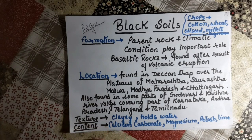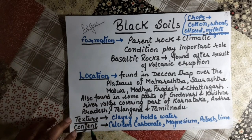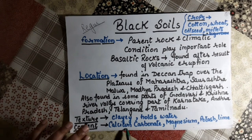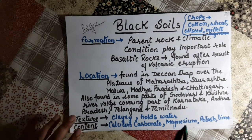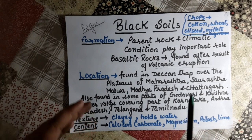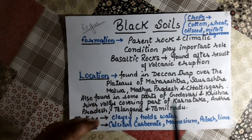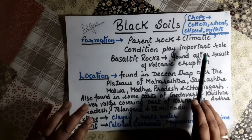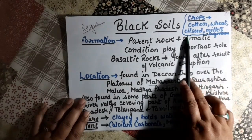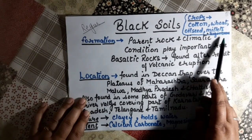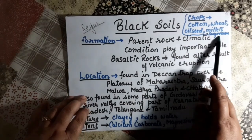Content of black soil: it contains calcium carbonate, magnesium, potash, and lime. Crops that can be grown in black soil include cotton, wheat, oilseeds, millet, sugarcane, and tobacco.